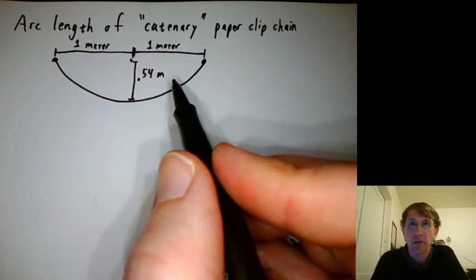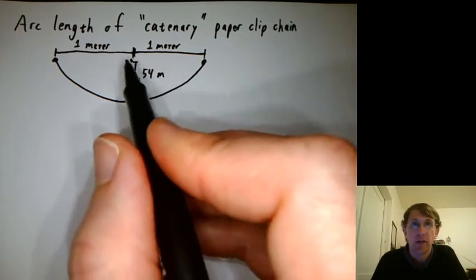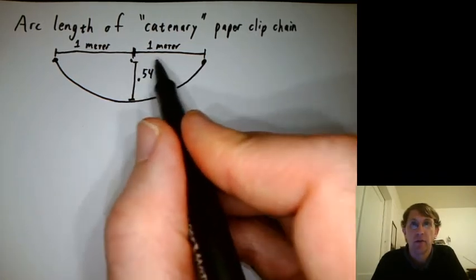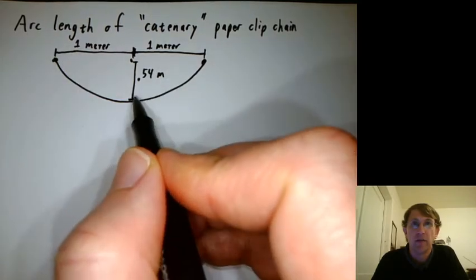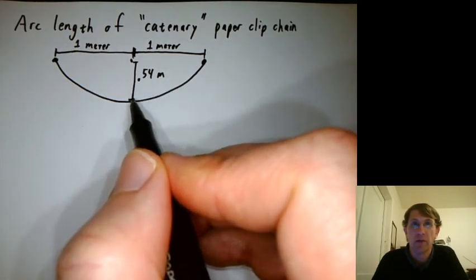Here's the world's best drawing of what we just had. We had here at the origin, we went one meter over this way, one meter over that way, and 54 centimeters or 0.54 of a meter that way.